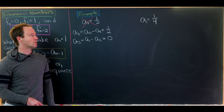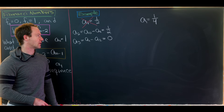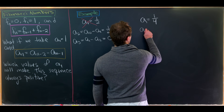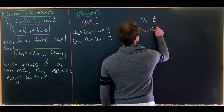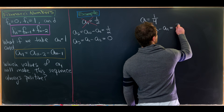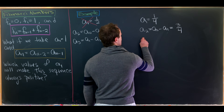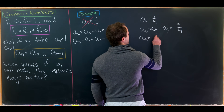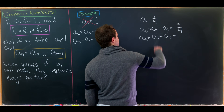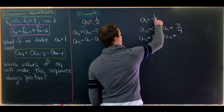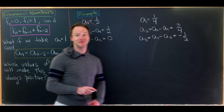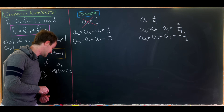Maybe the problem is that a_1 was too big, so let's try a_1 = 1/4. We get a_2 = 1 - 1/4 = 3/4. Then a_3 = a_1 - a_2 = 1/4 - 3/4 = -1/2. Again this doesn't work — the sequence goes negative.